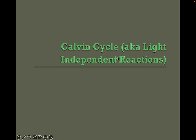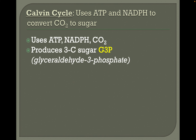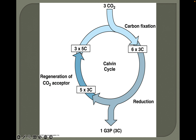The Calvin cycle, or the light-independent reactions, uses the ATP and NADPH from the light-dependent reactions to convert carbon dioxide gas into sugar. The reactants are ATP, NADPH, and carbon dioxide gas; they produce a three-carbon sugar called G3P. Three carbon dioxide gas molecules come in, are reduced, and produce one three-carbon molecule. What's left continues to cycle as more carbon dioxide gas comes in.